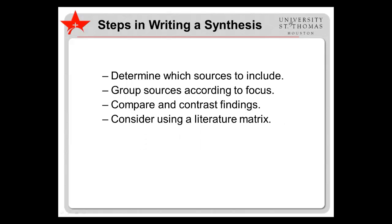To write a literature synthesis, you must first determine which sources are worth including. This involves taking the annotated bibliography a step further. In an annotated bibliography, you will have identified numerous sources about your topic, summarized them, and evaluated their quality and utility for your research. For a literature synthesis, you will select only those sources that are higher quality.